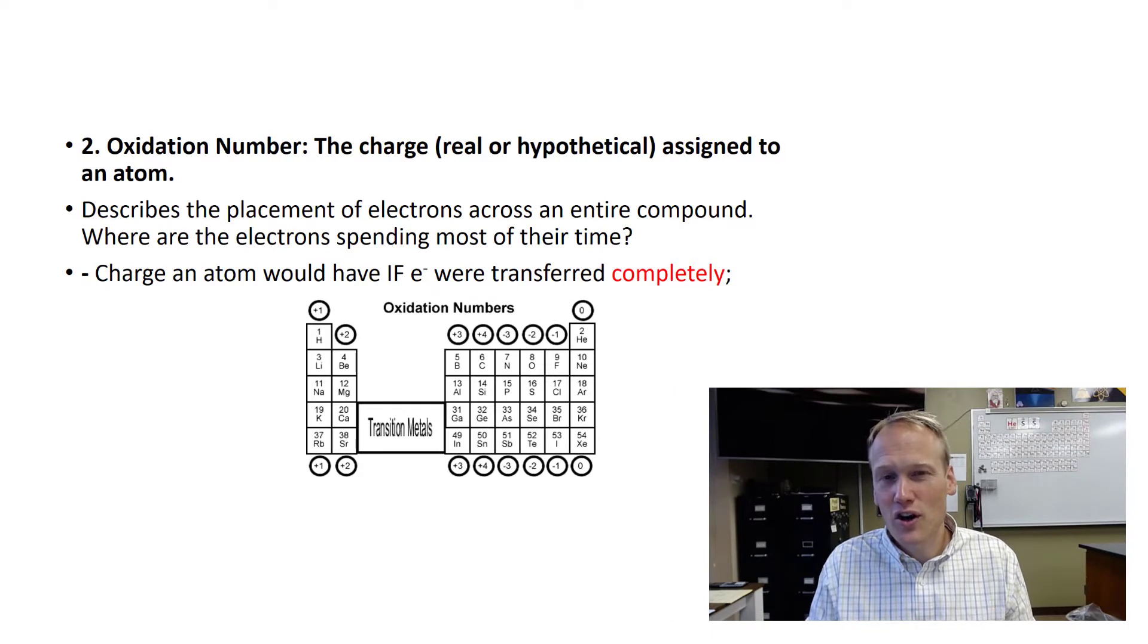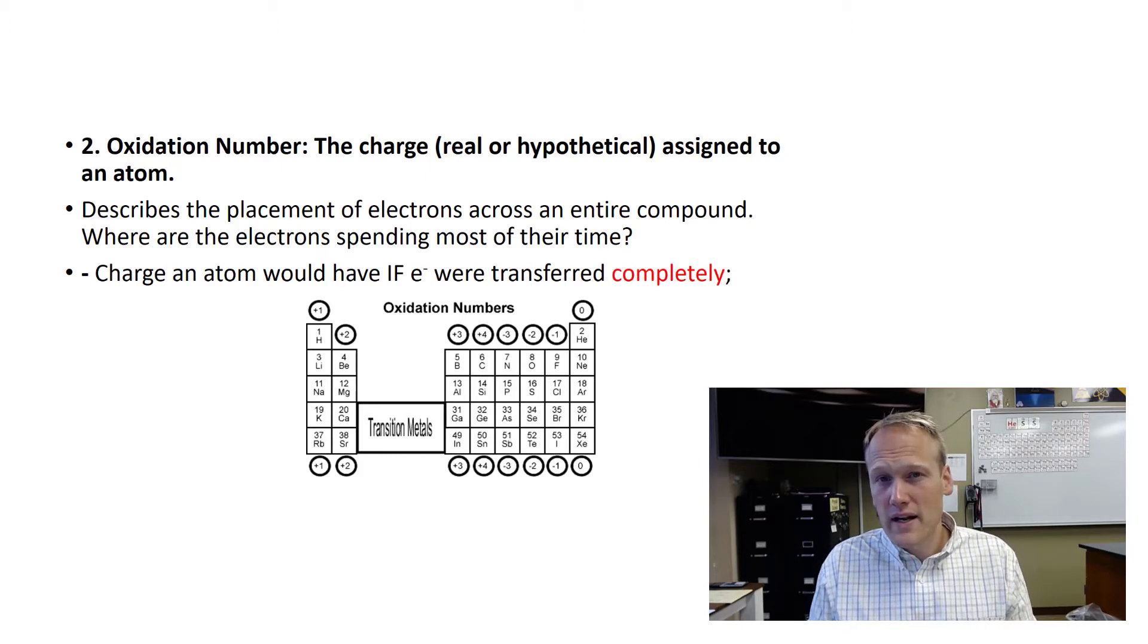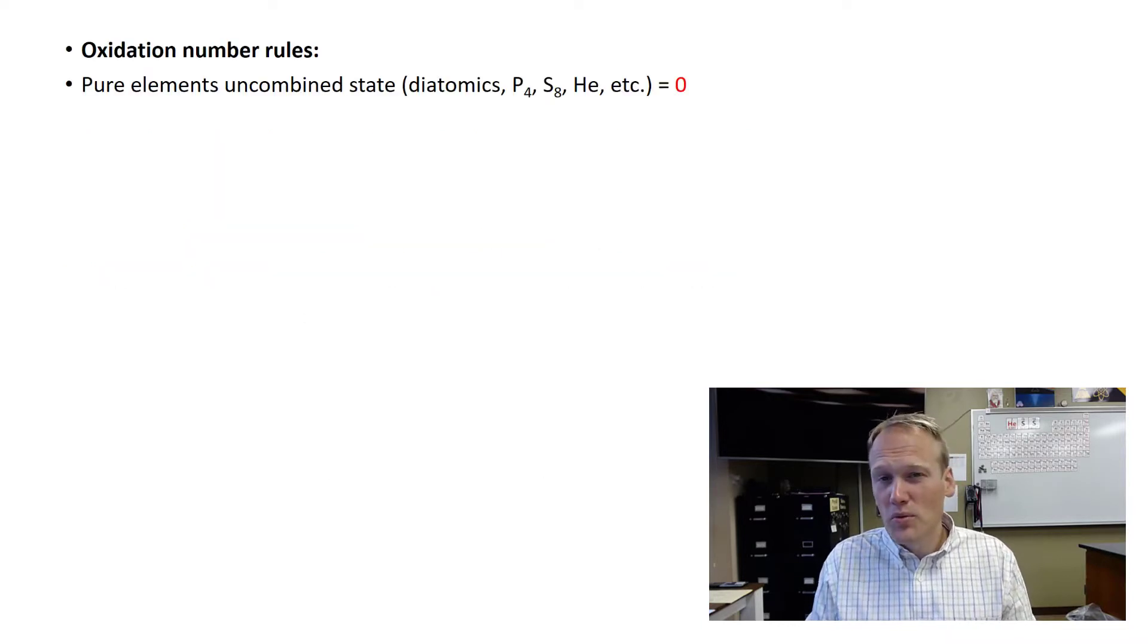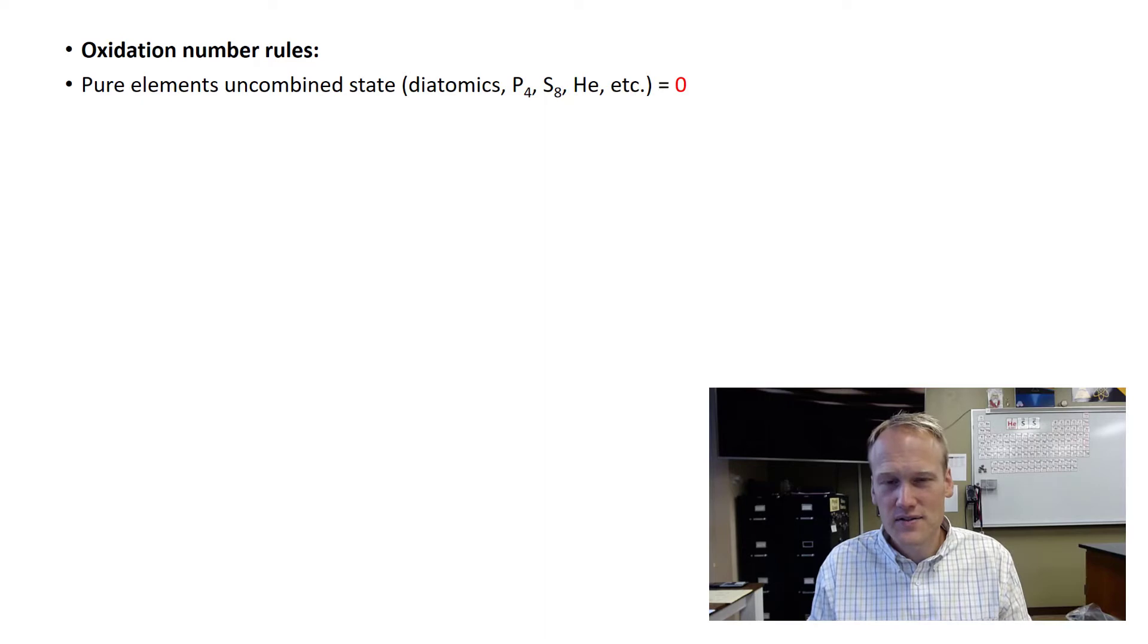An oxidation number is the charge within a compound of a specific atom. It's really a measure of after electrons are transferred to an atom or away from an atom, what's that atom's perceived charge? Some of these you already know based on their position on the periodic table, which is what this picture shows at the bottom of the slide. But there are more rules to oxidation numbers because there can be certain elements within a formula that are hard to identify if they've lost electrons or gained electrons.